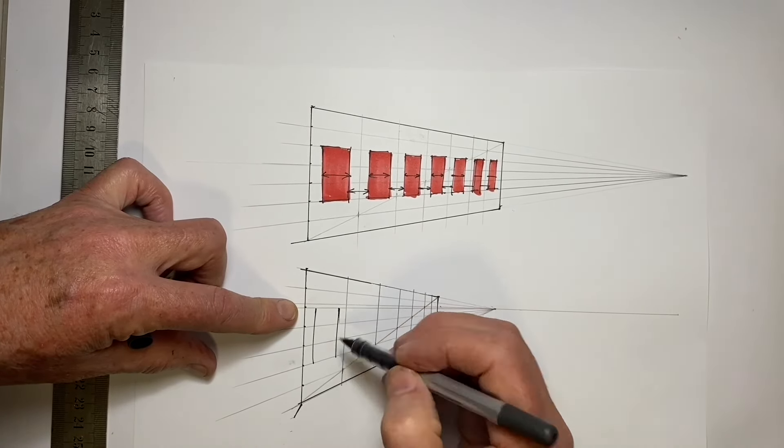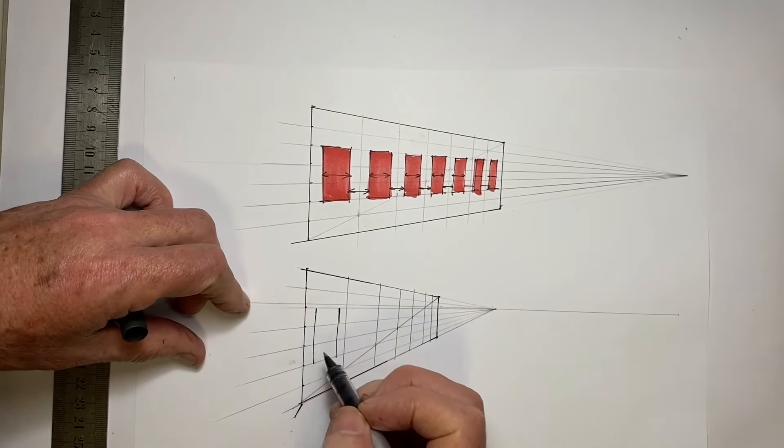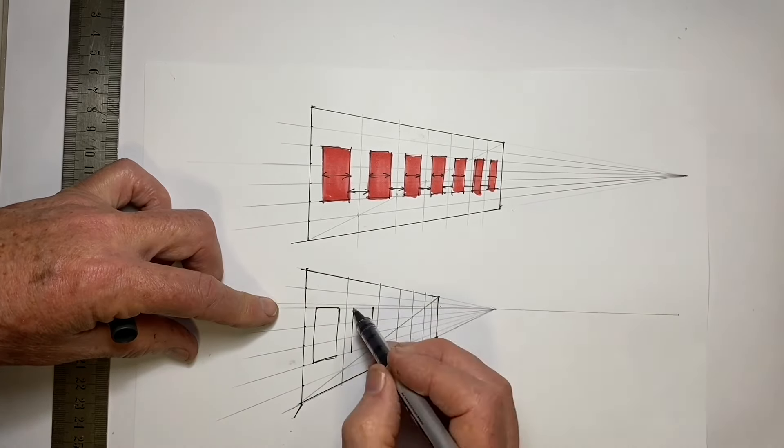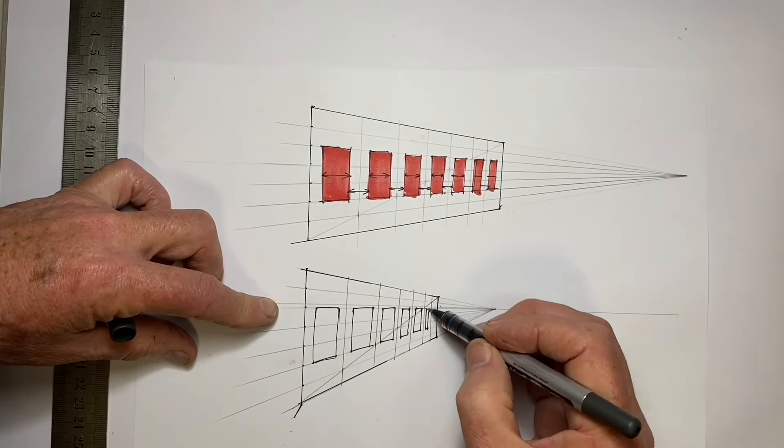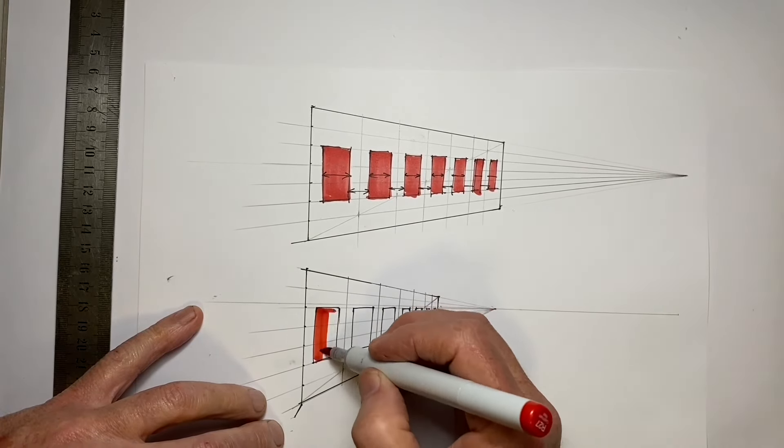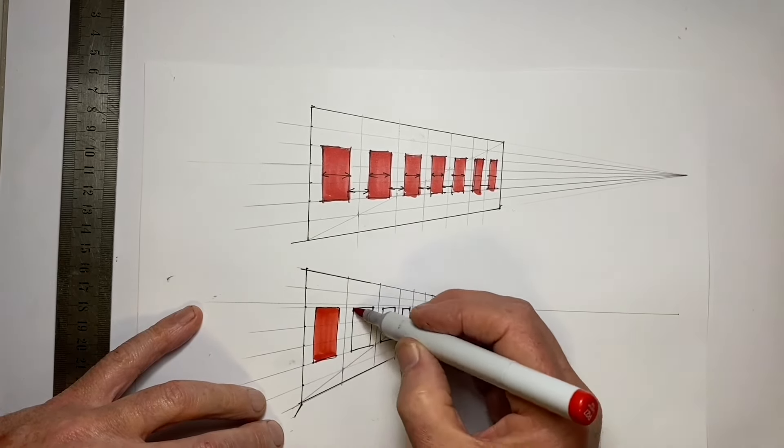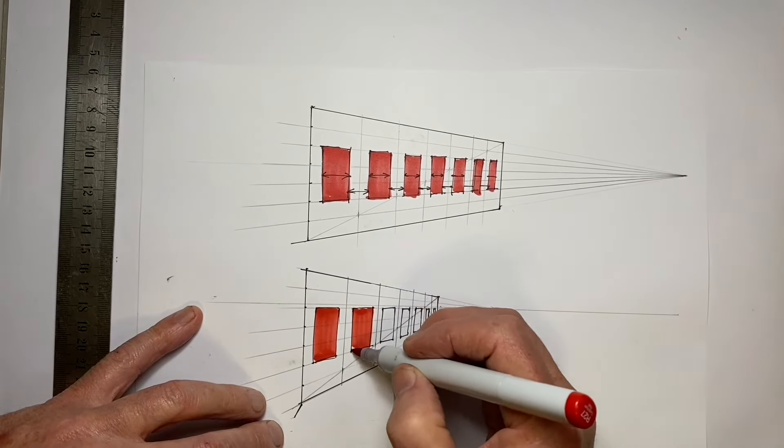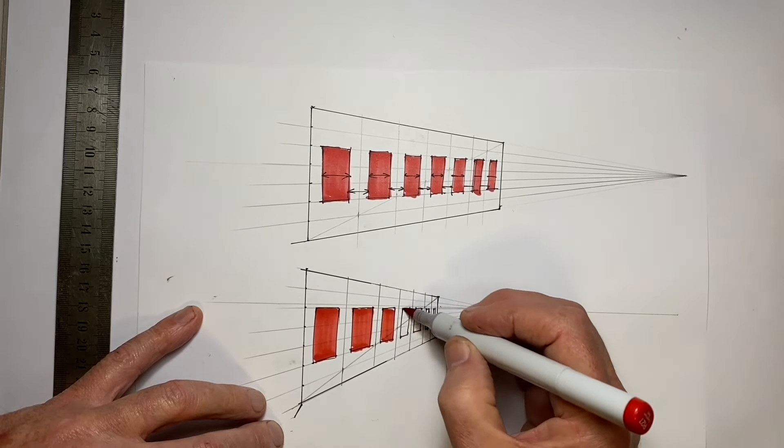Again we'll put the windows between the second and the fifth lines. And again we'll add some red just to emphasize exactly what's window. And again we can see that they line up looking right, looking as if they're real.